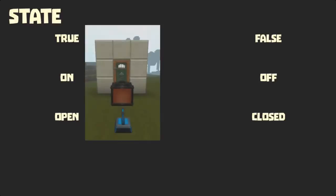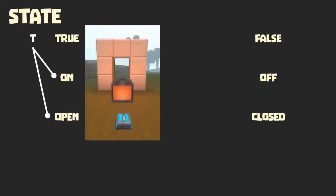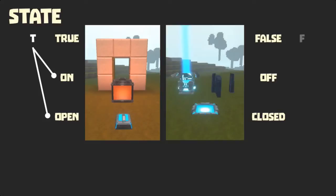In real-world circuits, some of these words are more appropriate in some context and incorrect in others, but within Creativerse, they are interchangeable. A switch that outputs a true signal can turn a light on or open a door. A pressure plate that outputs a false signal can turn a beacon off or close a gate.